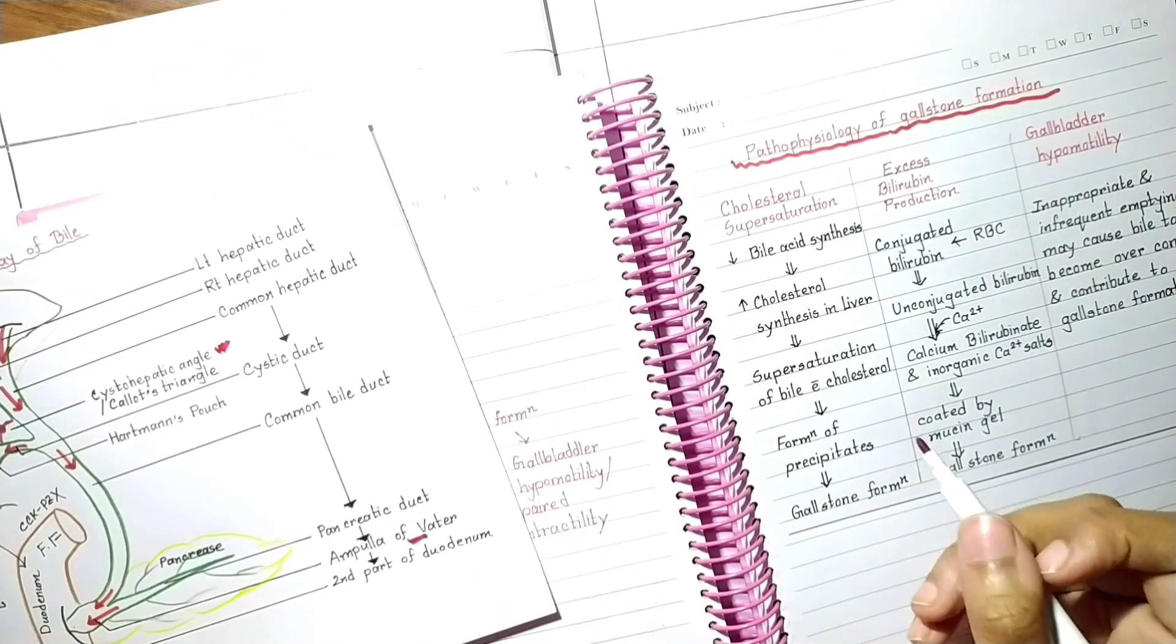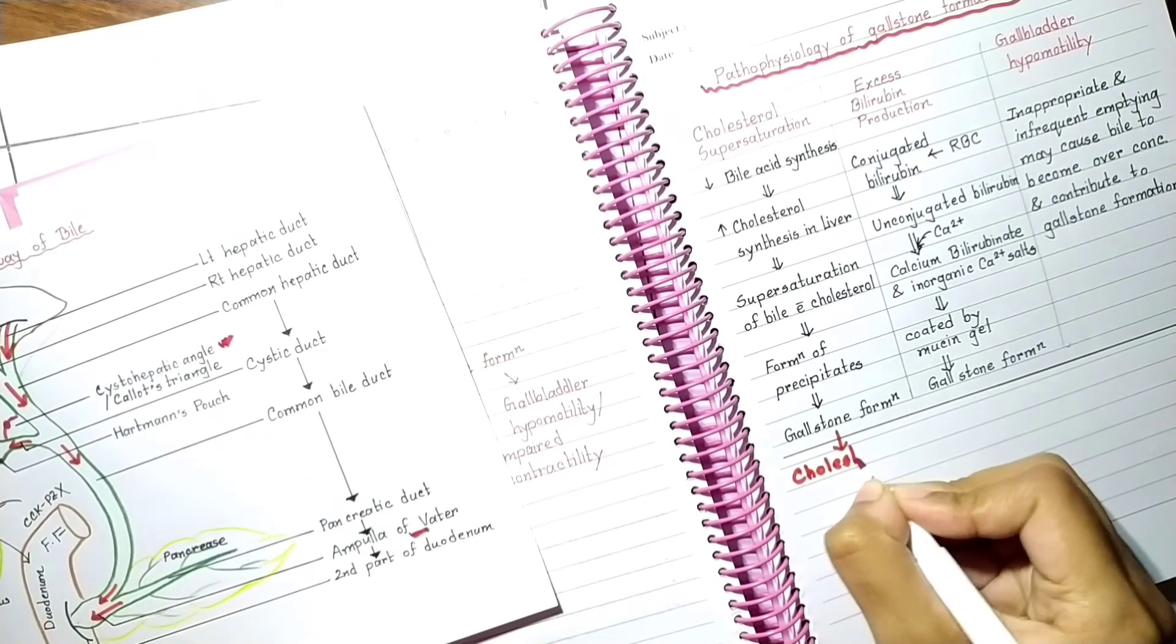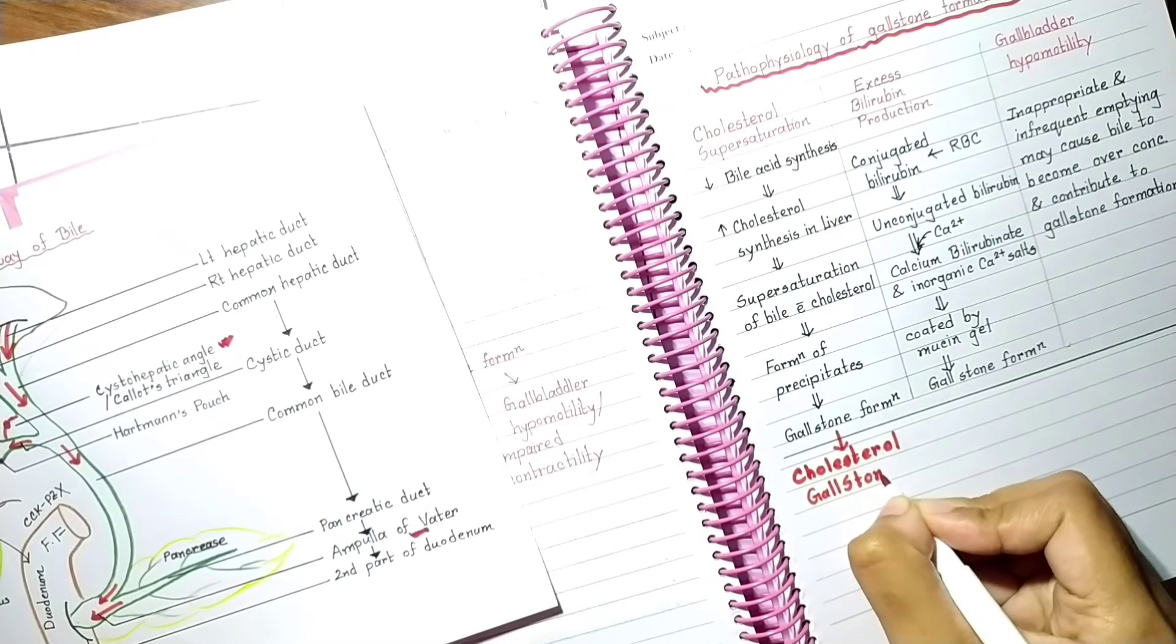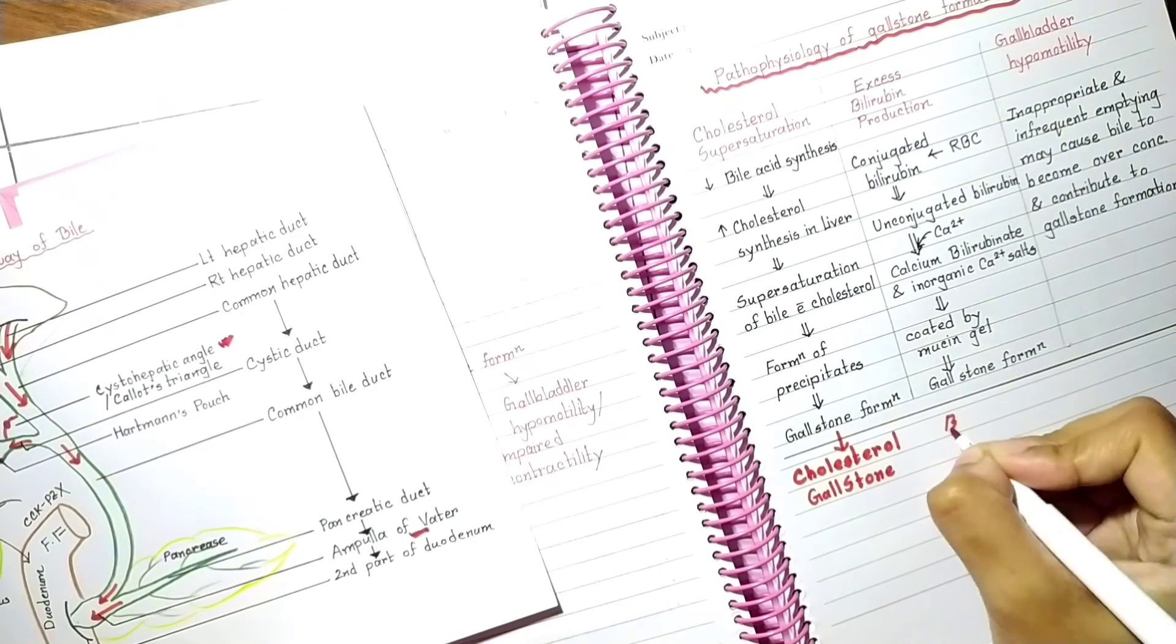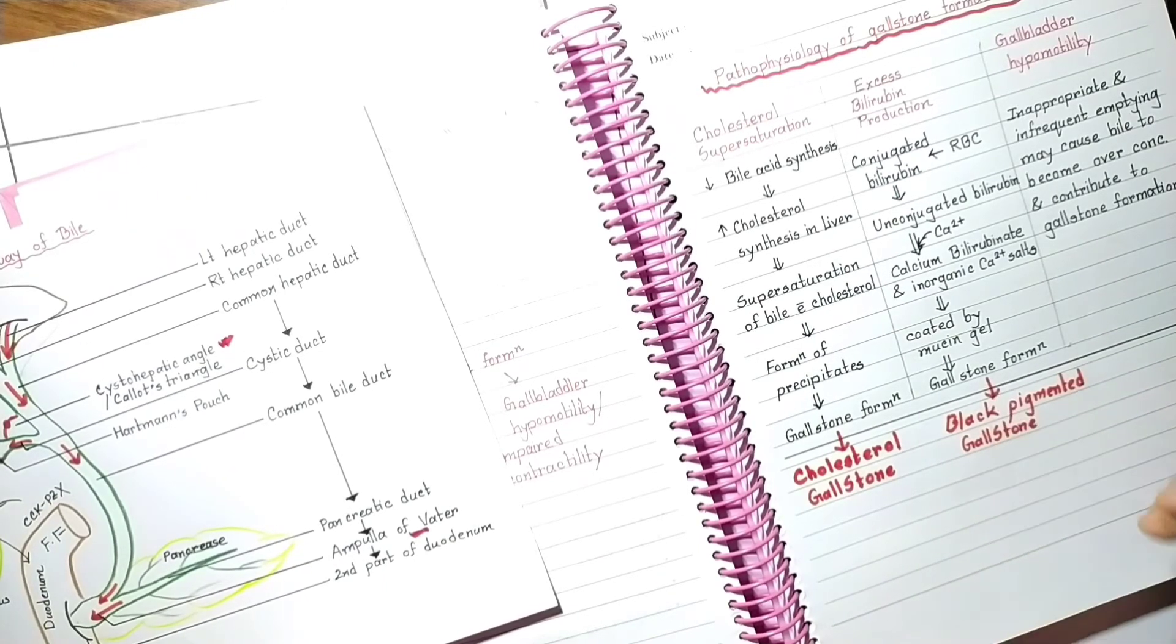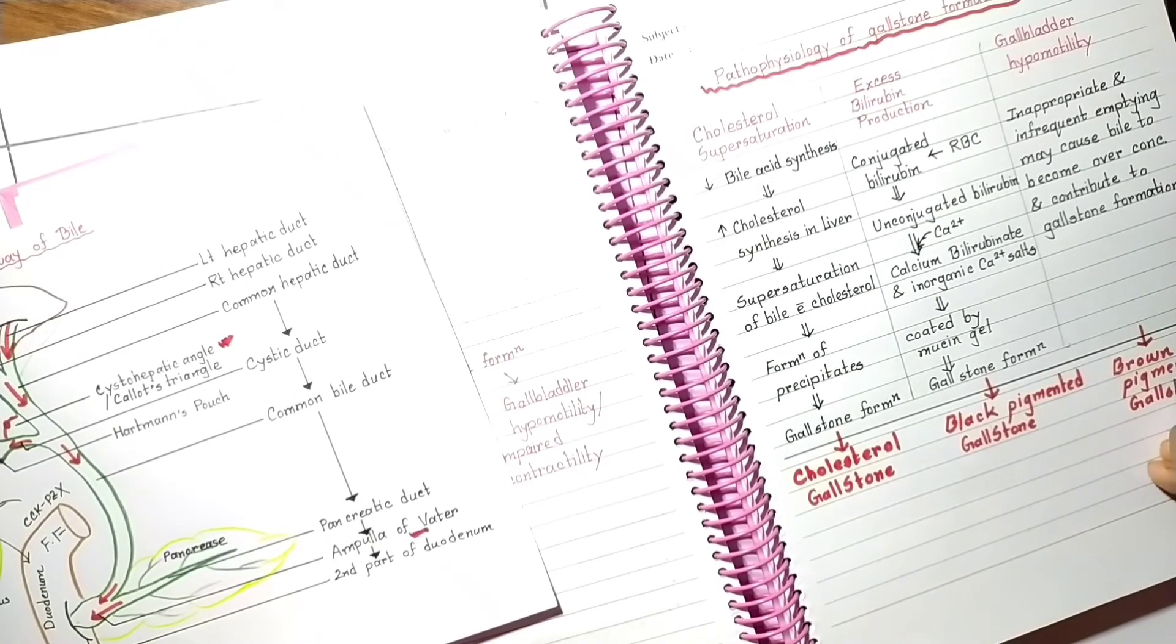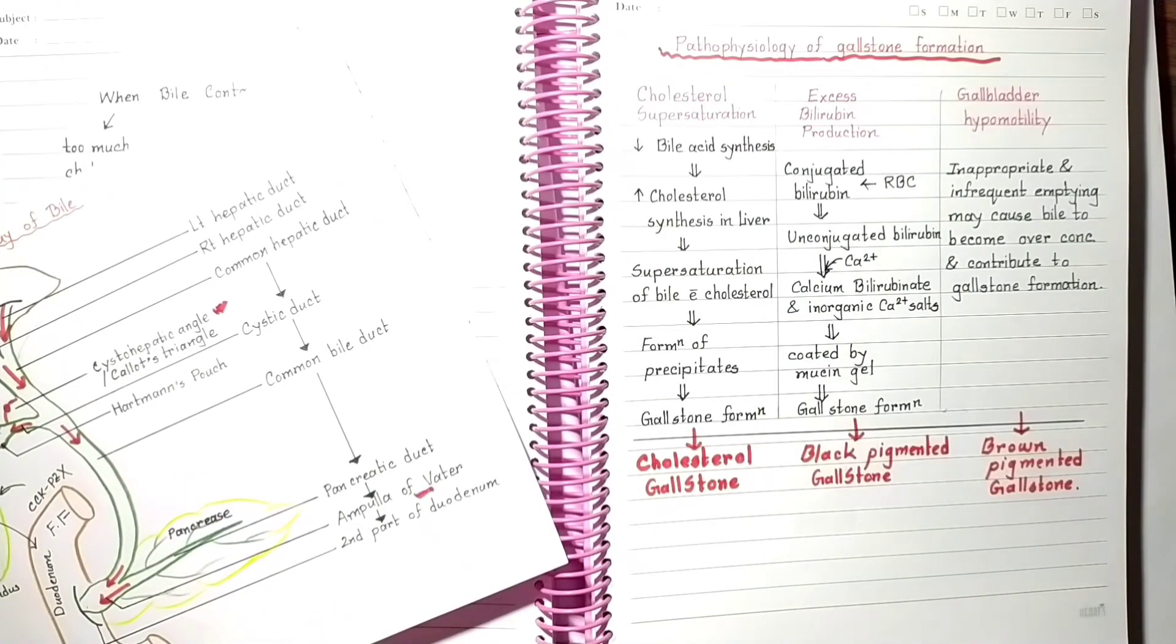Ultimately, the first pathway, cholesterol supersaturation, produces cholesterol gallstone, which is the most common gallstone. The second pathway, which was excess bilirubin production, produces black pigmented gallstone. And the third pathway, which was gallbladder hypomotility or impaired contractility, produces brown pigmented gallstone.